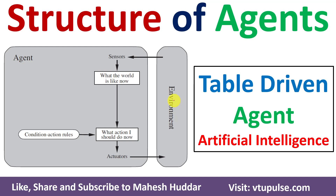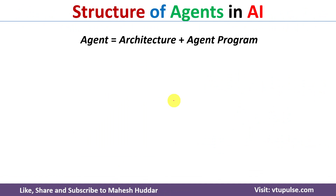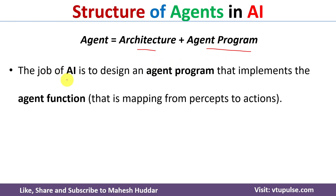Welcome back. In this video I will discuss the structure of agents in artificial intelligence with the help of a simple example. The structure of an agent in AI looks something like this — it is a combination of two things: architecture and agent program. The job of artificial intelligence is to design an agent program that implements the agent function.